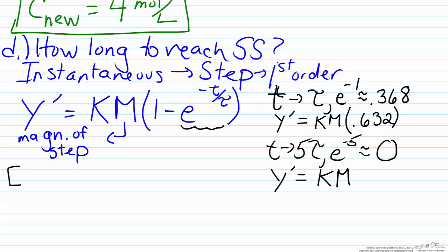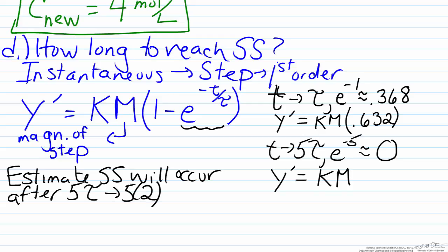So therefore as an estimate we can estimate steady state will occur after 5 tau. And recall the fact that tau was 2, so therefore this will happen after 10 time units, because we never defined what units the tau was in. It will be 10 minutes, hours or seconds.